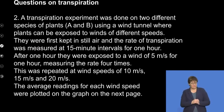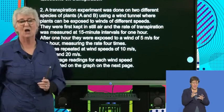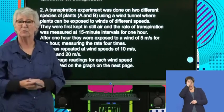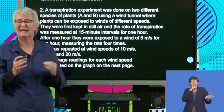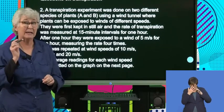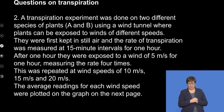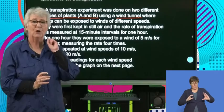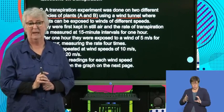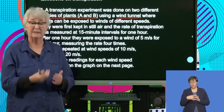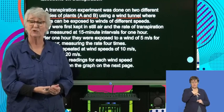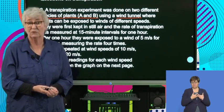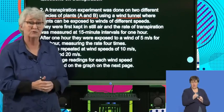Sometimes the description of experiments is quite long — don't let that fool you. Use a highlighter and pick up the important points; the length simply explains what is happening in the experiment. In this next example, we have two different species, A and B, using something called a wind tunnel that blows air at different speeds, then measures the amount of transpiration occurring. A pitometer would be used to measure how fast transpiration is occurring. The wind speeds tested were still air, then 5, 10, 15, and 20 meters per second — giving five readings total.